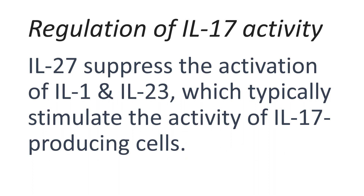Another cytokine, interleukin-27, which was initially known as a cytokine that promotes T-Helper 1 cells, was found to modulate T-Helper 17 cells. Interleukin-27 has a suppressive impact on T-Helper 17 cells, achieved by lowering the activation of interleukin-1 and interleukin-23, which typically stimulate the activity of T-Helper 17 cells and gamma-delta T-17 cells.